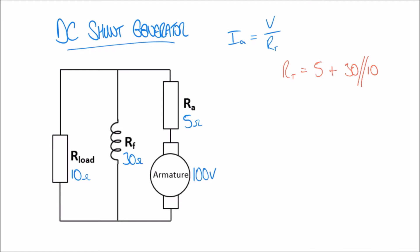In this case, 30 in parallel with 10 comes out as 7.5 ohms, so we simplify to 5 ohms plus 7.5 ohms, giving a total of 12.5 ohms. Going back to our equation, Ia equals 100 divided by 12.5, which gives a current of 8 amps.